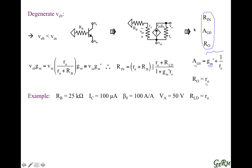Let us look at an example to see how the numbers turn out. We assume a base degenerating resistance of 25 kilohms, the transistor is biased at 100 microamps, and we use a transistor with a current gain β of 100 and an Early voltage of 50 volts, which represents base-width modulation. The circuit is loaded with a resistance equivalent to its own ro — that is, a resistor from the collector to AC ground equal to the transistor's ro.